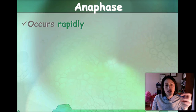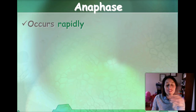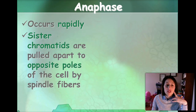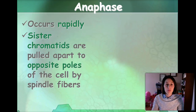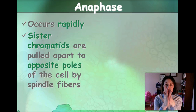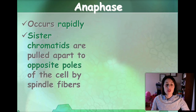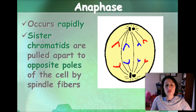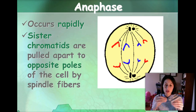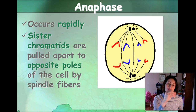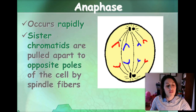Anaphase is the next phase, and this is a very quick part of mitosis. All that happens is those sister chromatids are pulled apart to the opposite poles — they actually pull apart, and now they're not duplicated copies anymore; they're individual chromosomes. They're going to move to what we call the poles of the cell, just like the poles of the earth. There are little proteins attached to the centromere that almost look like Pac-Mans, and they just chomp away at the spindle fibers and shorten them up.